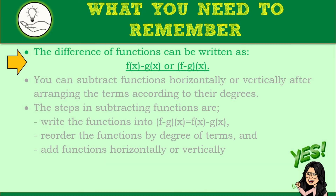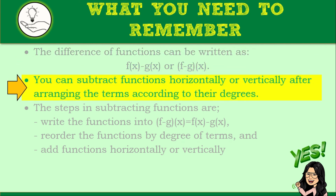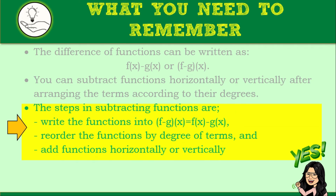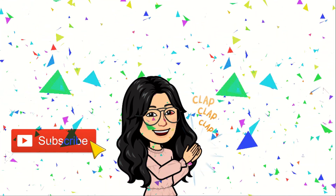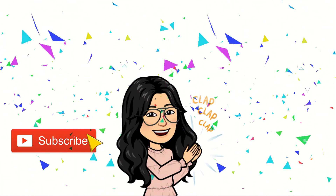What you need to remember: you can write the difference of functions as f of x minus g of x or as f minus g of x. You can subtract functions horizontally or vertically after arranging the terms according to their degrees. The steps are: write the functions in the form f minus g of x equals f of x minus g of x, reorder the functions by degree of terms, then add functions horizontally or vertically. Give yourself a round of applause for doing a job well done. If you find this video useful, do not forget to subscribe. See you in the next lesson.